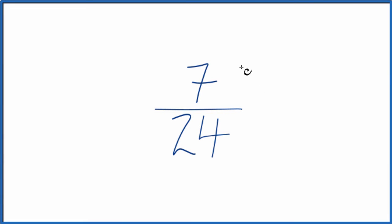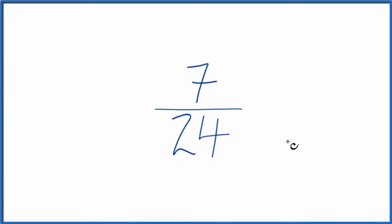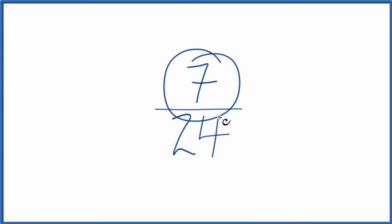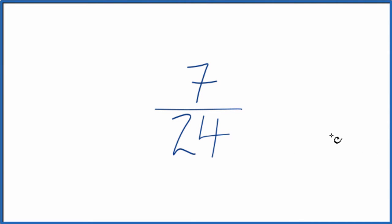Let's simplify the fraction 7/24. We're looking for another fraction that's equivalent — equal to 7 divided by 24 — it's just that we've reduced or simplified it down to lowest terms. It'll still have the same decimal value, it's just simplified.